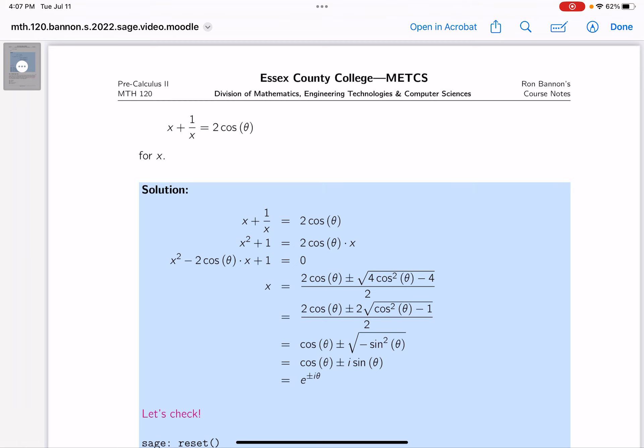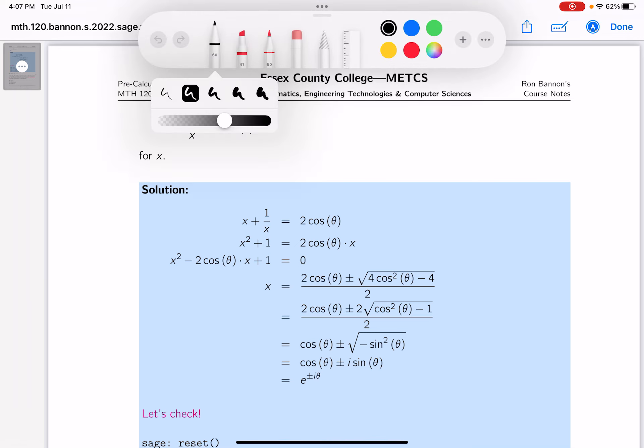So what I would do is certainly clear the fraction by multiplying both sides by the LCD, which is just simply x. What would you get? You would get x squared plus 1 equals 2 cosine theta times x, right? Still looks strange to me. I'm going to solve for zero. That's going to be x squared minus 2 cosine theta times x plus 1 equals 0.